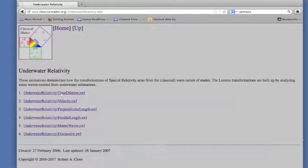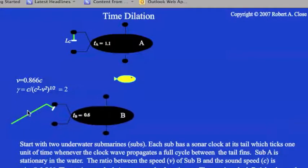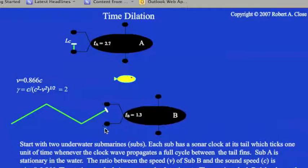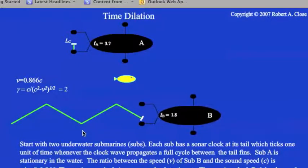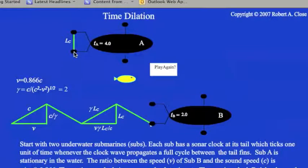Let's start with the first one, look at what's called time dilation. Here we see two funny looking submarines. Each one has a little clock that counts time by propagating a sound wave or sonar wave back and forth between two transducers. So every time the wave propagates across and then back down, that gives one tick on the clock. The moving submarine is moving at a speed of 0.866 times the wave speed, which here we call C.